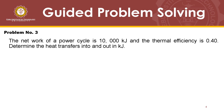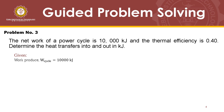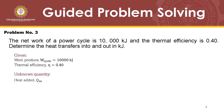We will now proceed with the last problem. The net work of a power cycle is 10,000 kilojoules and the thermal efficiency is 0.40. Determine the heat transfer into and out of the cycle in kilojoules. We are given the work cycle, which is 10,000 kilojoules, and the thermal efficiency of 0.4. The unknown quantities are the heat added, or Q_in, as well as the heat rejected, or Q_out.